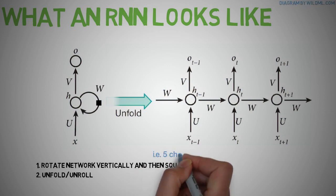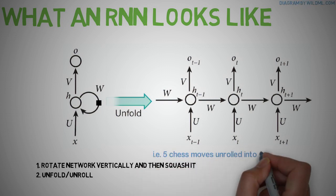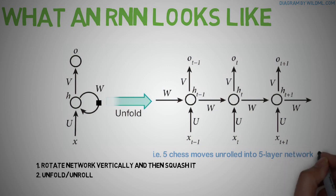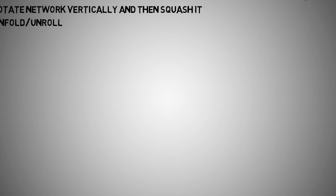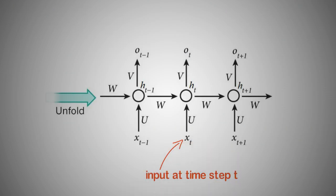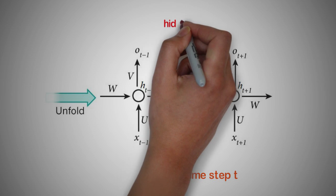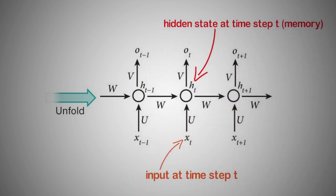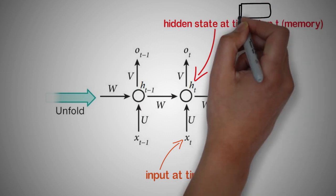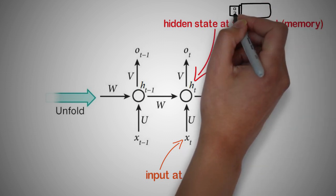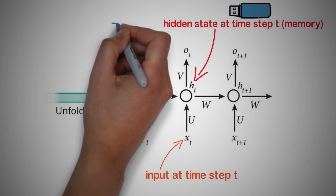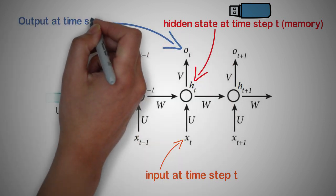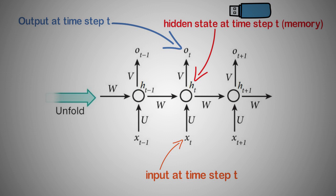By unrolling it we simply mean that we write out the network for a complete sequence. For example, if the sequence we care about is a 5 just moves, the network could unroll into a 5 layer neural network, one layer for each move. Where x of t is the input at time step t, h of t is the hidden state at time step t. It is the memory of the network, where h of t is calculated based on the previous hidden state and the input at the current state. O of t is the output at step t, O of t equals the softmax of v subset h of t.